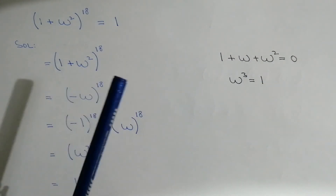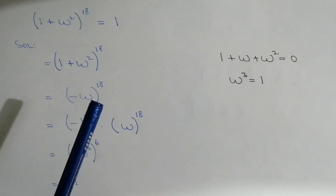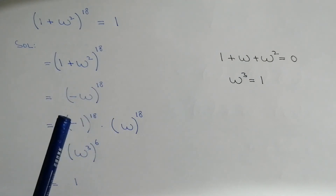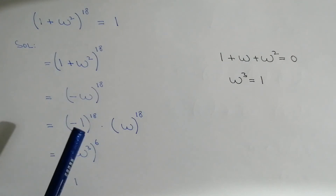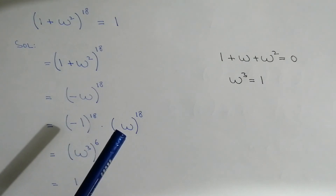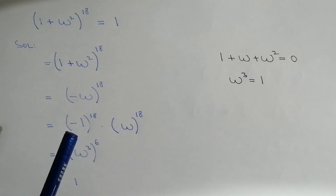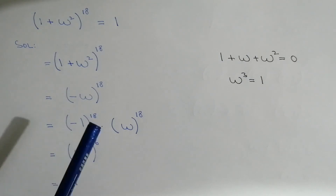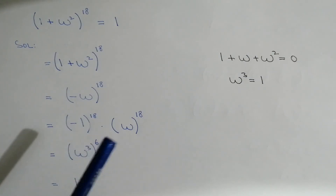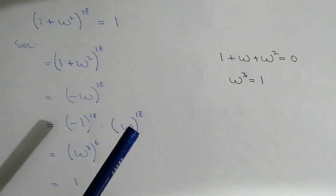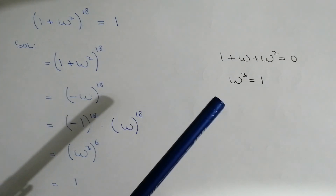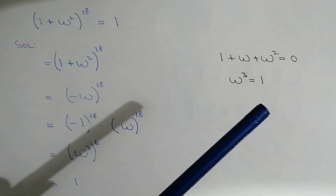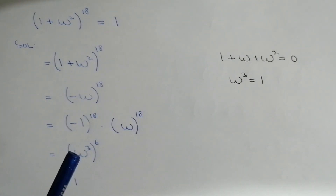So this is equal to minus omega, whole power 18. We can further rewrite it as minus 1 whole power 18 into omega power 18. We know that whenever minus 1 has an even power, it will be positive. So it is equal to 1 into omega power 18. We will break down to a multiple of 3 because omega cube is equal to 1, so omega cube whole power 6 — since 3 times 6 is 18.